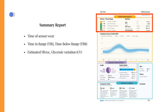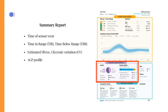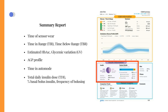In the case of pregnancy, it is important to adjust the target range accordingly. The report usually contains an AGP profile that displays trends of hypo or hyperglycemia, enabling you to identify patterns and assess the impact of meal boluses. The summary report also highlights details about insulin delivery, like time in auto mode, total daily insulin dose, percentage of basal and bolus insulin, and the frequency of bolusing.